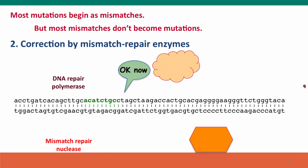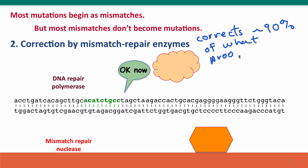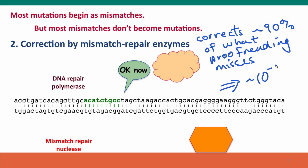A repair polymerase comes in and fills in the gap using the template strand to insert the correct base, restoring functional DNA. The efficacy of mismatch repair is such that it corrects about 90% of what proofreading overlooks. So the final error rate is approximately 10⁻⁹ errors per base pair — an extraordinary fidelity for a molecular complex to achieve, far better than we can do ourselves.